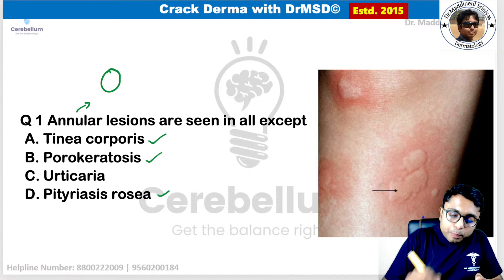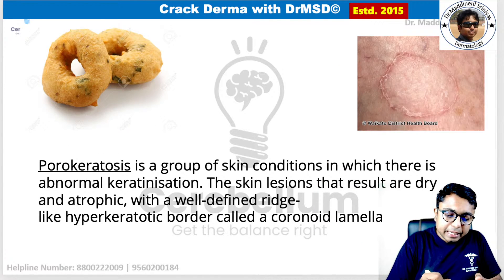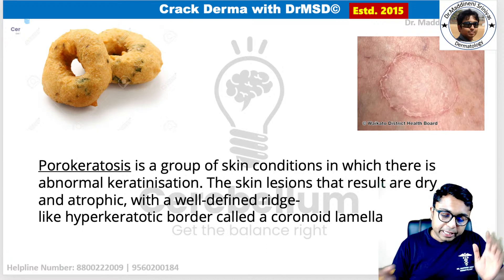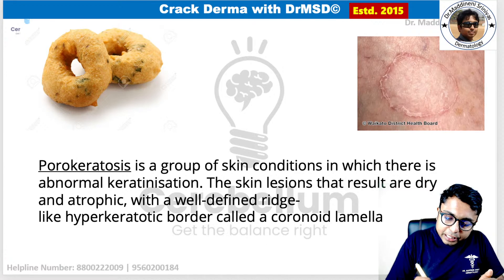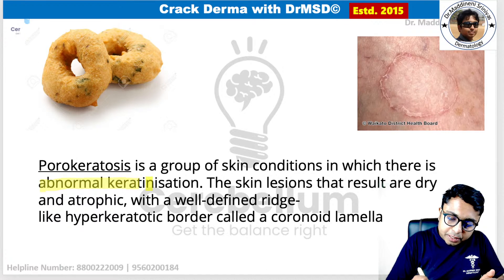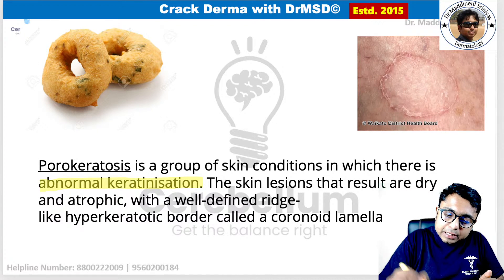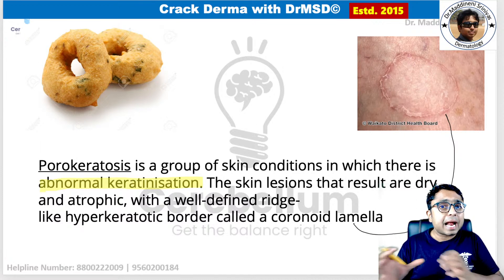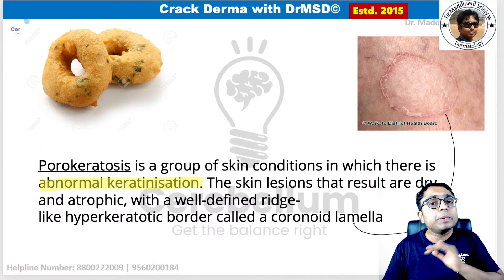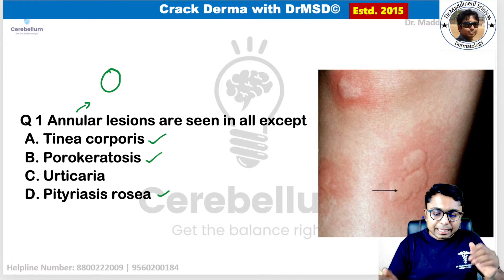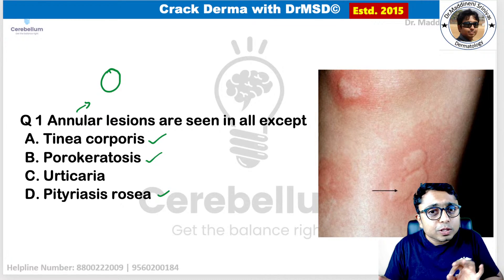Porokeratosis — please remember, this has not been asked till now, so this is the 'hot' option. It is a skin condition due to abnormal keratinization. At the periphery, what we call the coronoid lamella will be present, and the center is going to be clear.